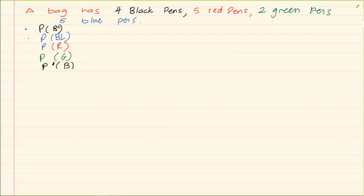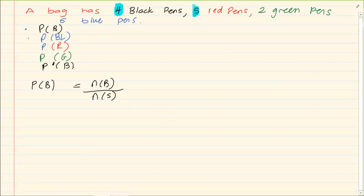What is the probability of pulling out a black pen? Now we know what is the n of the black pens? It is four over what is the n of the total amount? So we have four plus five which is nine plus two which is eleven plus six which is seventeen. So we have four over seventeen.